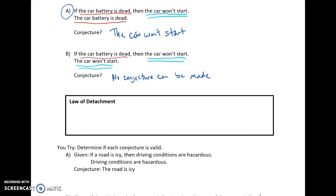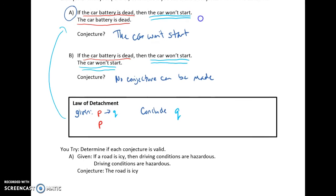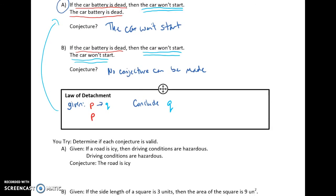The law of detachment: when you're given a conditional — if P then Q — and you're given one additional piece of information which is that P happens, then we can conclude that Q will also happen. That's like example A: if a car battery is dead then the car won't start, and we're told the battery is dead, so the car won't start. But we can't conclude anything if we're given Q instead of P.